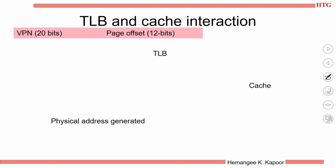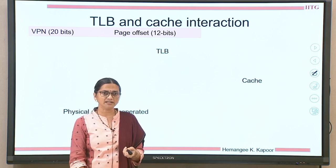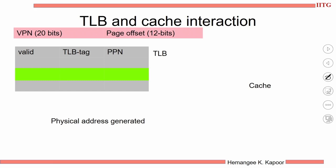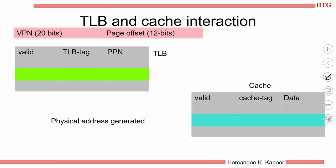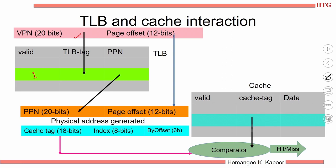TLB sits between the translation from the virtual address to the physical address. Now we will see the interaction of the TLB with the cache. The virtual address — a 32-bit virtual address with VPN and page offset — first goes to the TLB to search for the physical page number. In parallel, the cache holds the actual data. We translate the virtual address to the physical address first. On a TLB hit, I got the physical page number; copy the physical page number and construct the physical address.